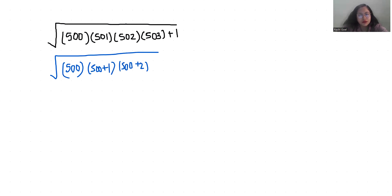Now I'm going to take substitution. Let x equals 500, so this becomes x times x plus 1 times x plus 2 times x plus 3 plus 1. Now let's multiply the brackets.